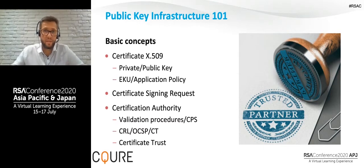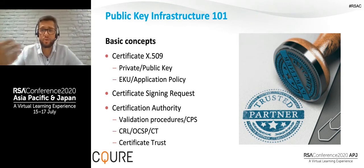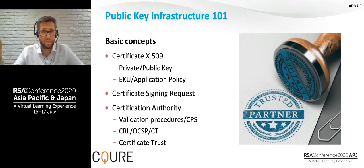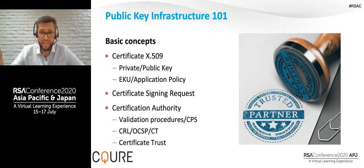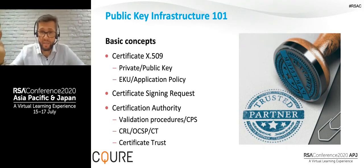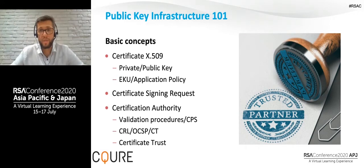The Certification Authority publishes a CPS — a legal document describing how it manages and issues certificates. Based on this we decide whether to trust different CAs. We also need Certificate Revocation Lists (CRLs) and the Online Certificate Status Protocol (OCSP), which allow us to invalidate certificates if the private key becomes compromised. There is also Certificate Transparency — a system collecting logs of all issued certificates — allowing us to find if someone is requesting or using malicious certificates.